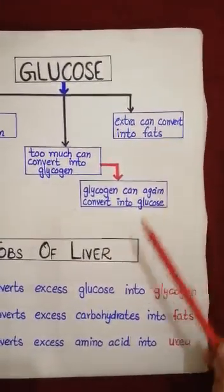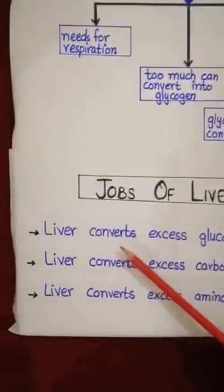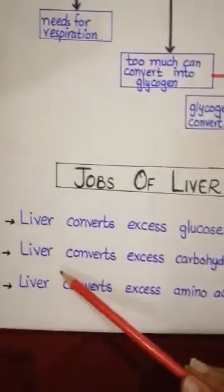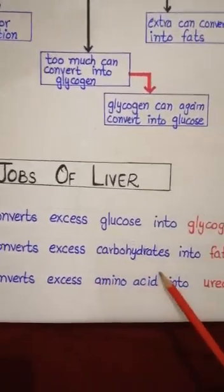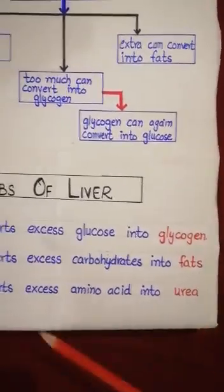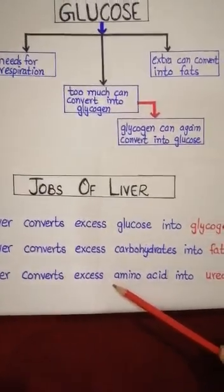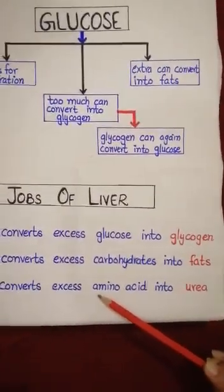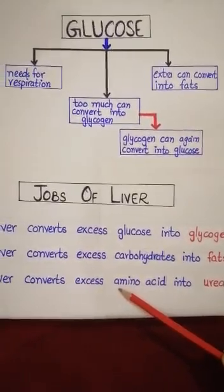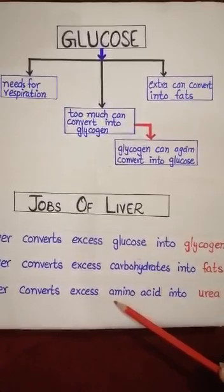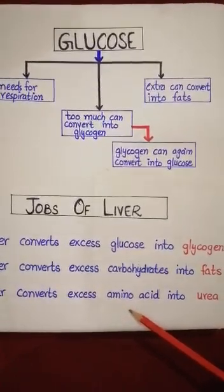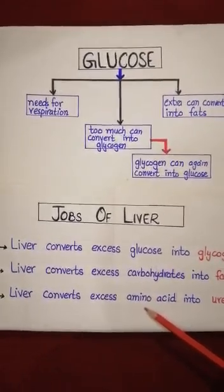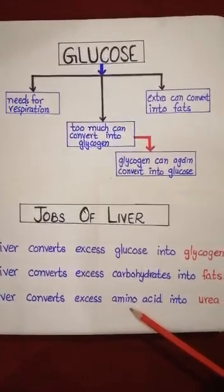Extra glucose can also be converted into fats by the liver. So the jobs of the liver are: it converts excess glucose into glycogen, converts excess carbohydrates into fats, and can also change extra amino acids into a substance called urea, which is excreted from the body. Amino acid is a substance formed by the breaking down of protein molecules, and it is used for the growth and repair of the body.